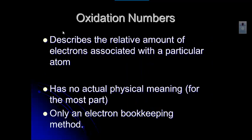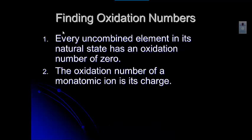Oxidation numbers describe the number of electrons that are associated with an atom. They don't really have a physical meaning for the most part, but they're an electron bookkeeping method. We're going to look at how we do that.